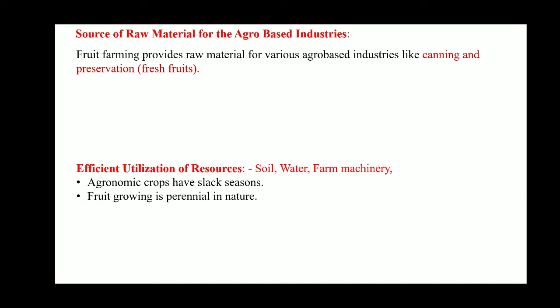Fruit farming is a source of raw material for agro-based industries like canning and preservation of fresh foods — it can be called the mother of all industries. Efficient utilization of resources such as soil, water, and farm machinery is also possible in horticultural crops.